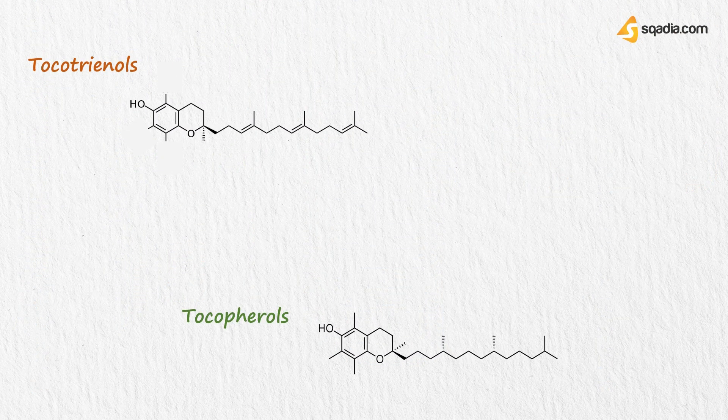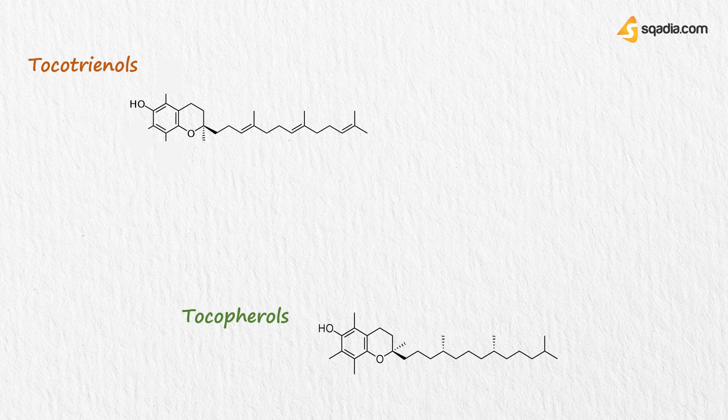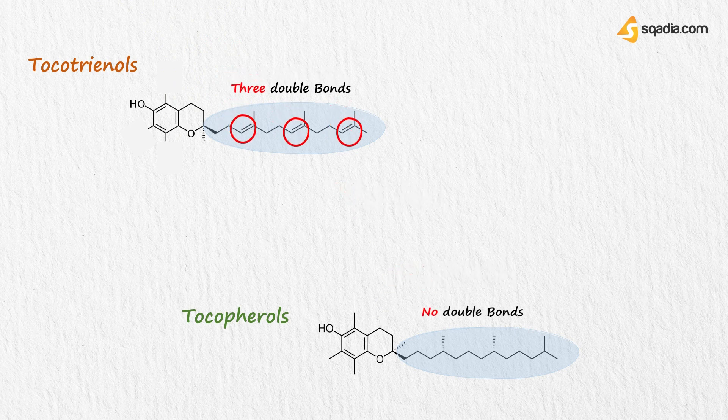Tocopherols and tocotrienols both have the same basic structure. The main difference is in their side chain. As the name tocotrienol indicates, they have three double bonds in their side chains, but tocopherols don't have double bonds in their side chain. Tocotrienols have unsaturated tails, while the tail of tocopherol is saturated.